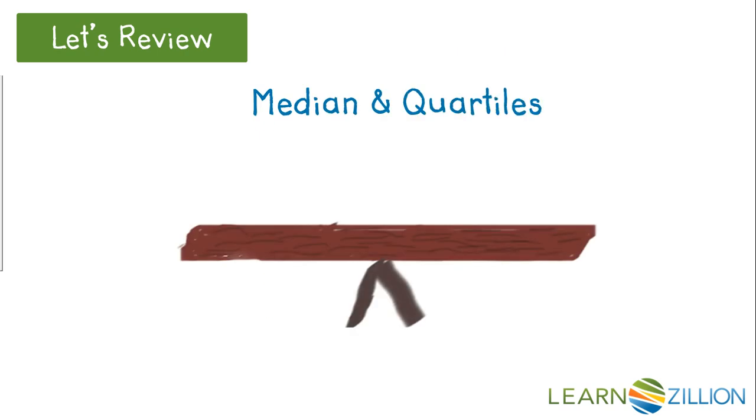Just a quick reminder regarding median and quartiles. Think of balancing the data on a teeter-totter. Here is a small set of data with a median of five. You'll notice three numbers on each side. To find quartile one and quartile three, find the middle of each half.